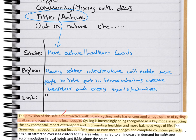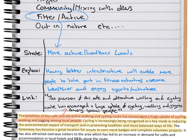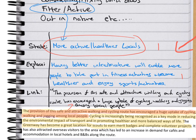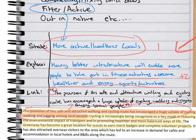So my explanation is: 'Having better infrastructure will enable more people to take part in fitness activities and become healthier and enjoy sports and activities.' The statement gives us one mark, the explanation gives us two, and then the direct link gives us two as well. Your link has to be relevant — pick out the first sentence from the text, put it in quotation marks word for word, and you'll pick up the mark.